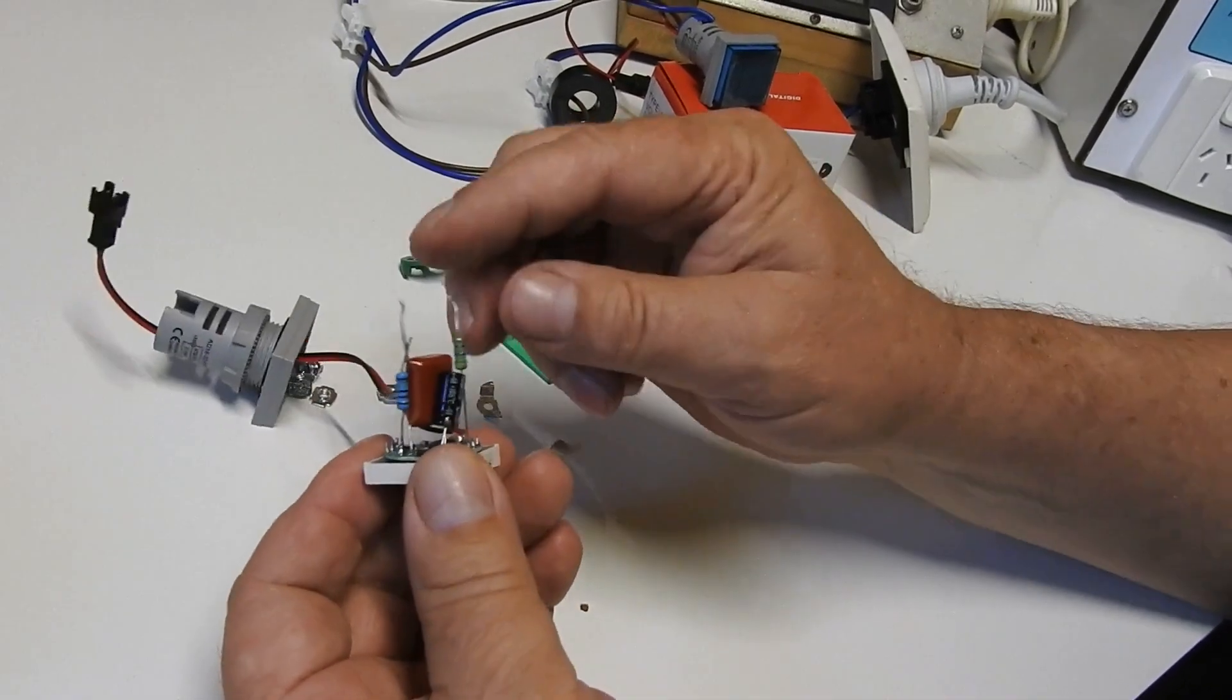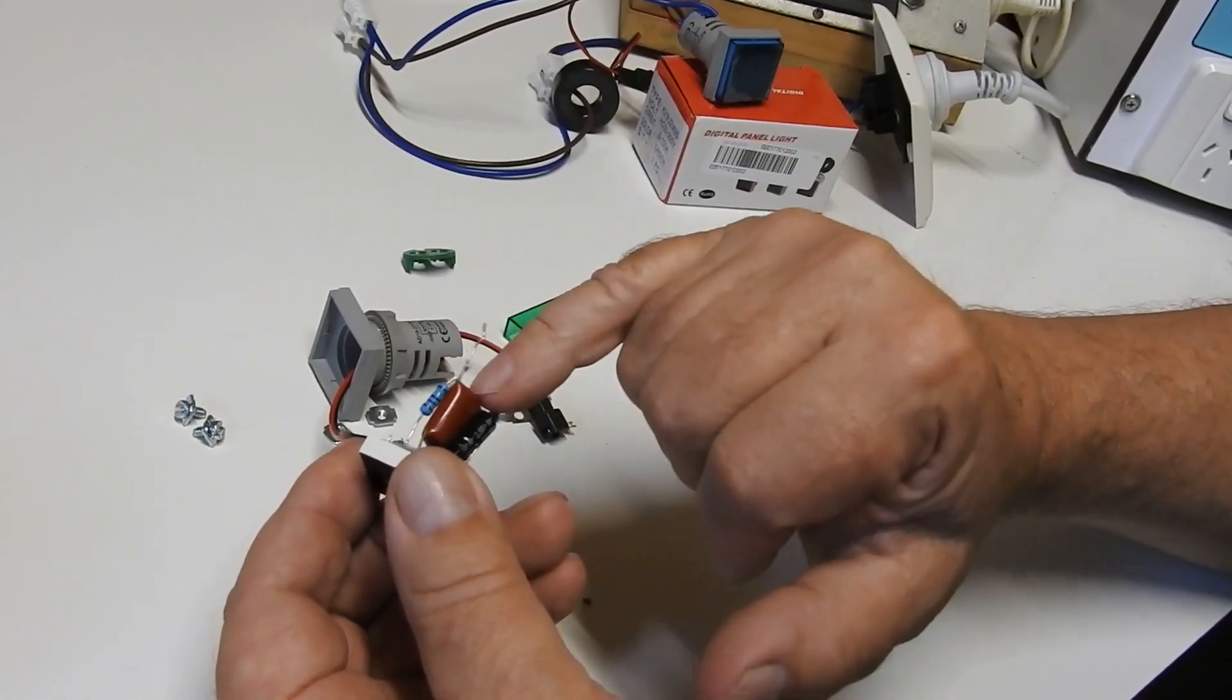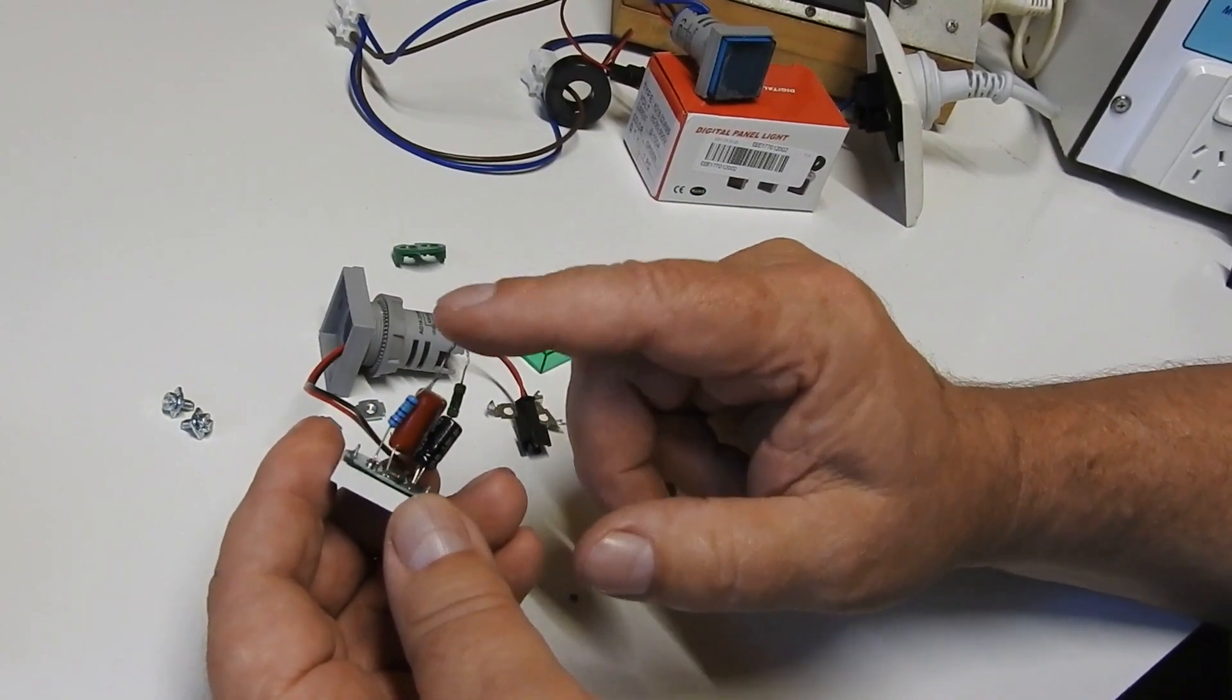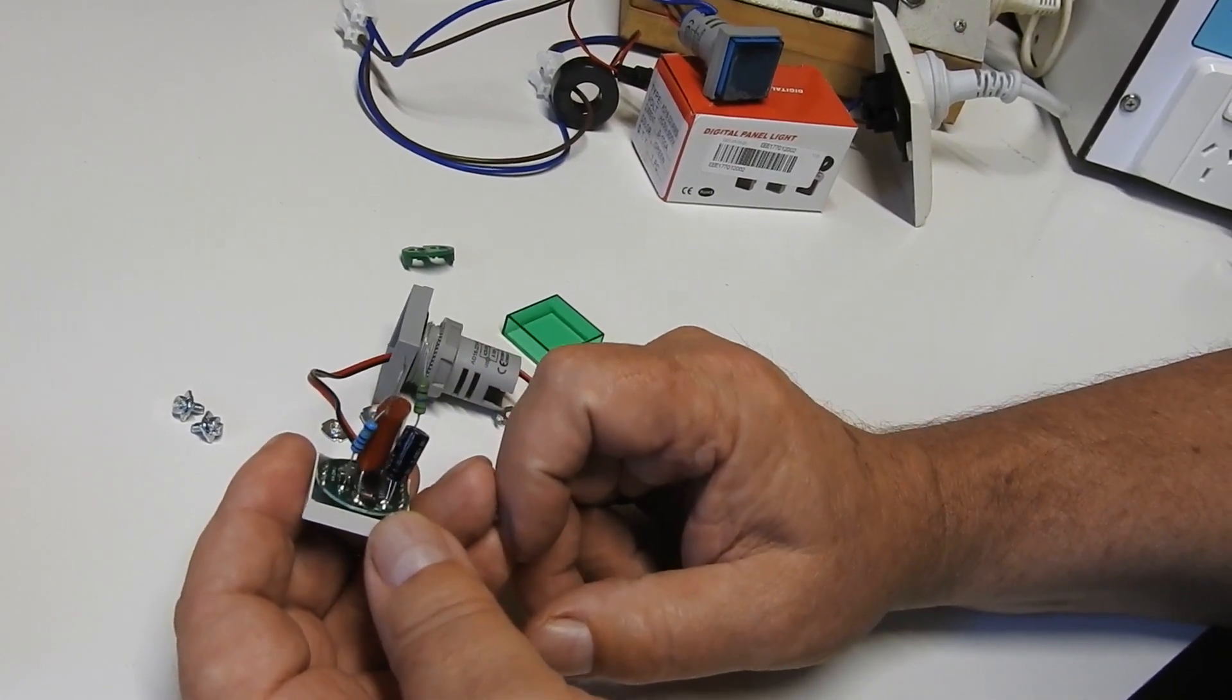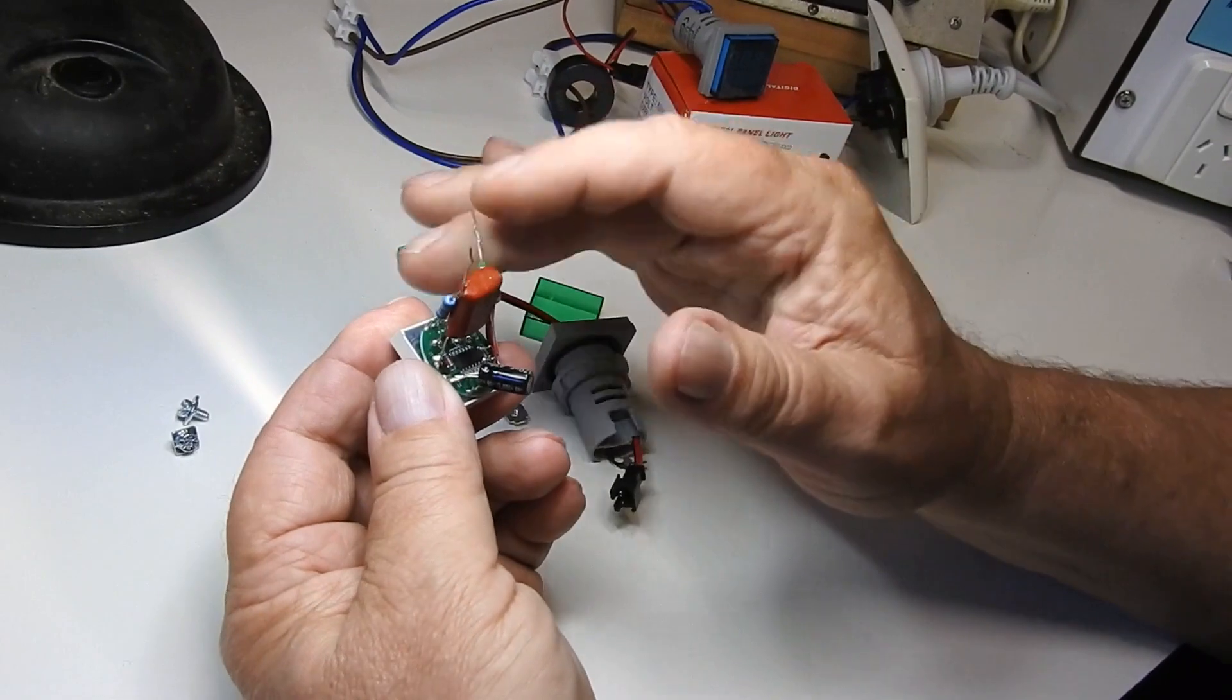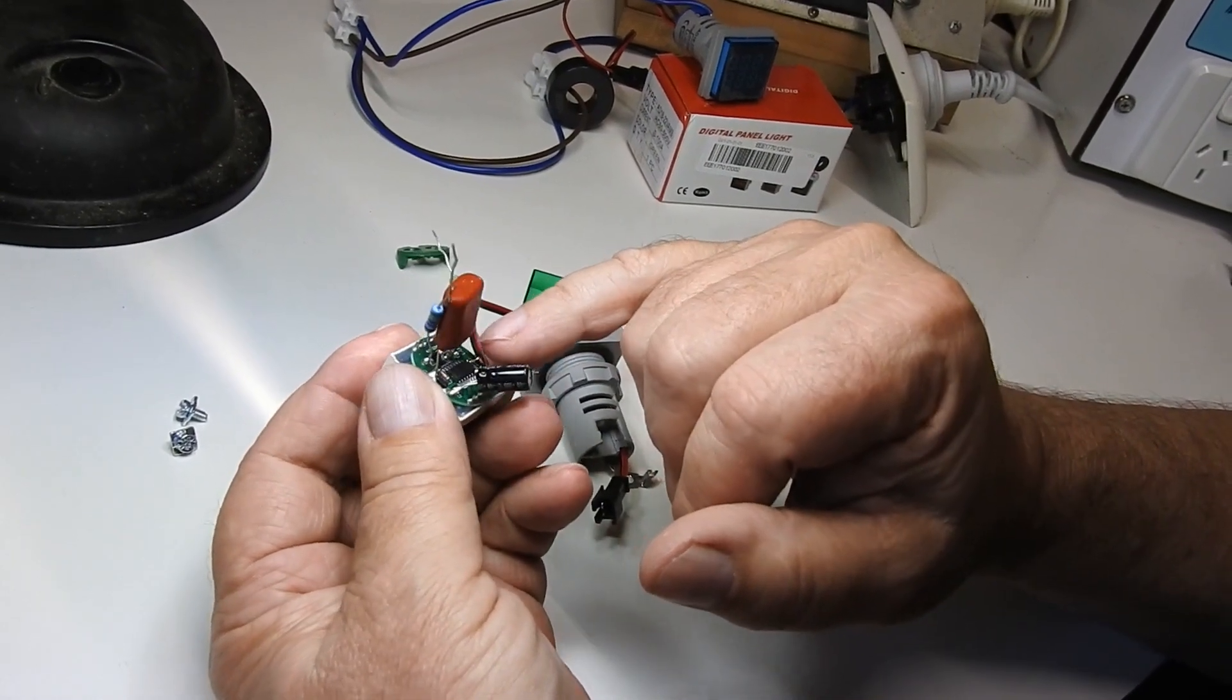And with those desoldered from the leads you can pull this through. And you can see we've got two resistors which is what those things solder on to. One of them is soldered to this capacitor which I presume is to supply power to run the meter. And the other function of the resistors is to do with sensing the voltage.